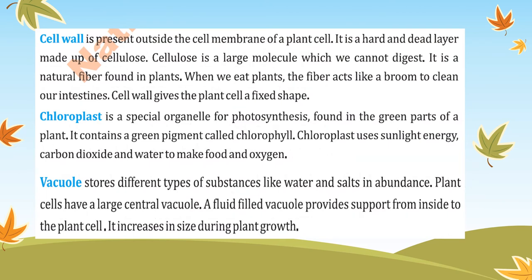Now the differences between animal and plant cells. The cell wall is present in the plant cell and absent in the animal cell. This cell wall is very hard and made up of cellulose, which is a hard and dead material — a large molecule that cannot be digested by animals. It is a natural fiber found in plants; when we eat plants, this fiber acts like a broom and cleans our intestine. The cell wall gives the plant cell a fixed shape.